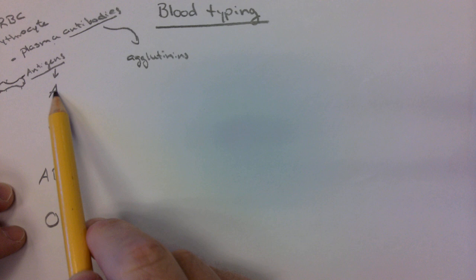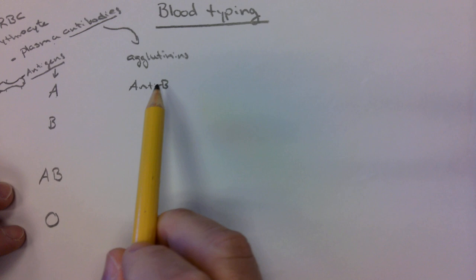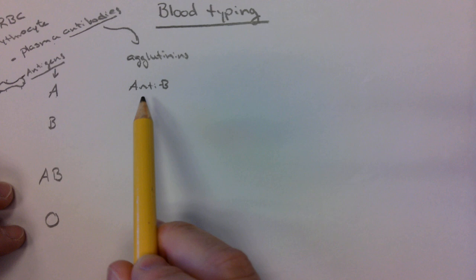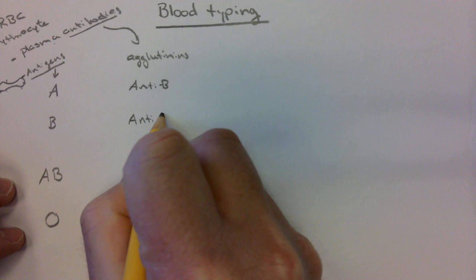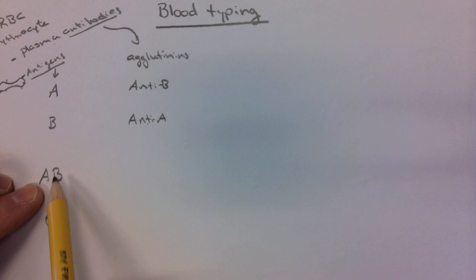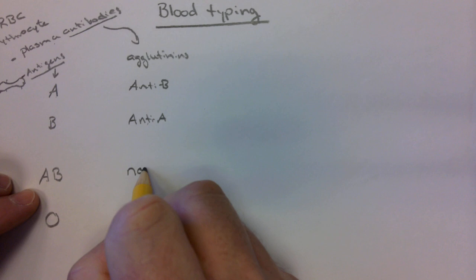Agglutinins will cause agglutination, and they're going to be opposite of the type of antigen that's present. So for type A blood, the agglutinin is anti-B. These agglutinins will react with any type of B blood that's introduced into that system and cause agglutination — it's an immune response, it's not a clot. If type A has anti-B, then B will have anti-A. We can't have anti-A on AB blood because it would break down half the blood cells, so the agglutinins present on AB are none.